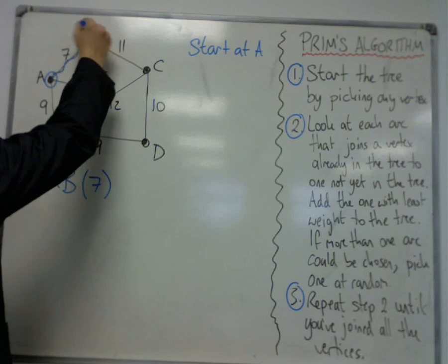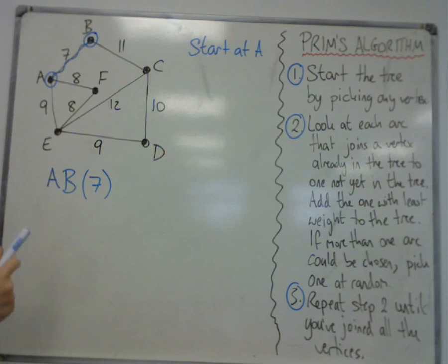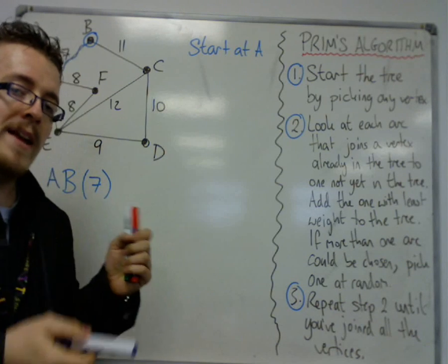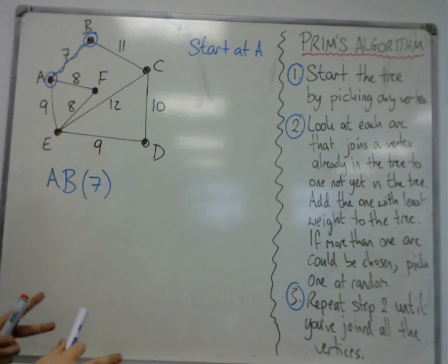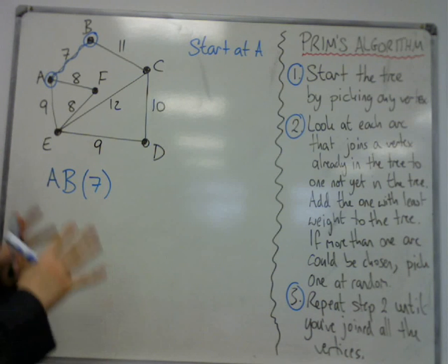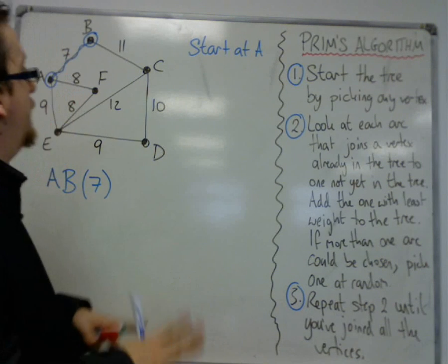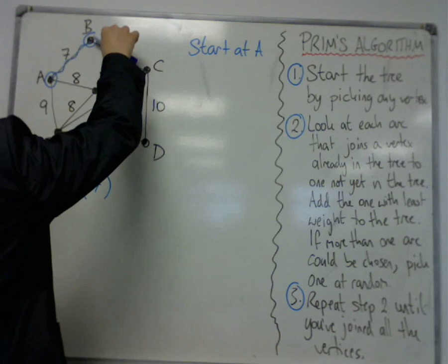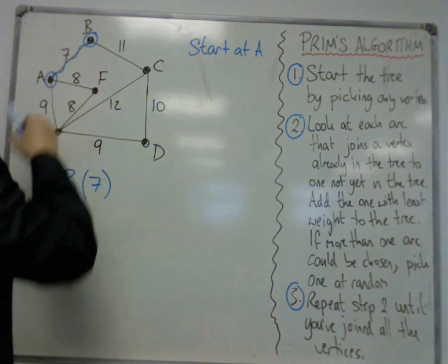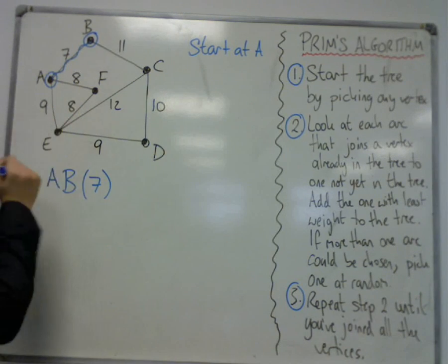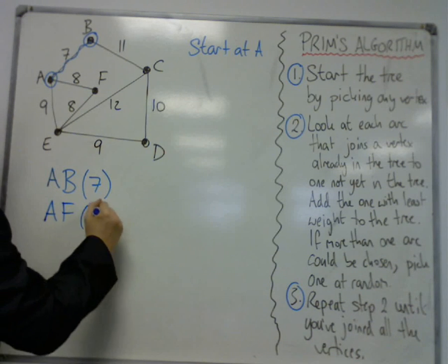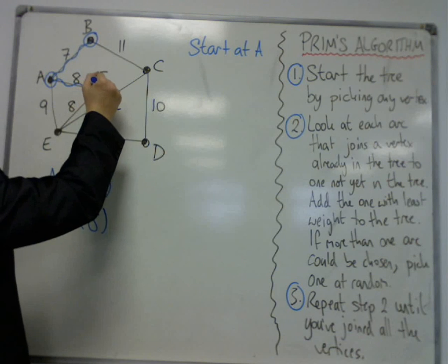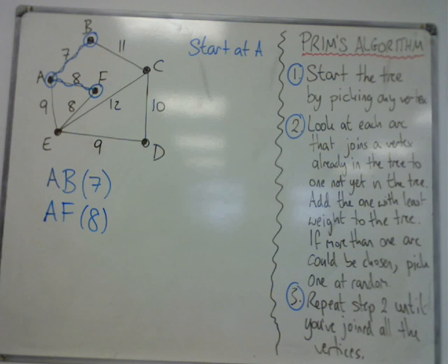Right, I've now connected A and B, and I'm looking at the edges coming out of both vertices for the shortest edge that will not create a cycle. I've got 11, 8, and 9. So the shortest one is the 8. So A, F, 8, which connects F.